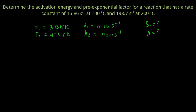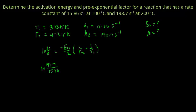The key to this problem is using the two-temperature form of the Arrhenius equation: the natural log of K2 over K1 equals negative Ea over R, times the quantity 1 over T2 minus 1 over T1. Plugging in values: ln(198.7 / 15.86) equals negative Ea over 8.314 joules per mole Kelvin, times (1/473.15 K minus 1/373.15 K). The only unknown is the activation energy.